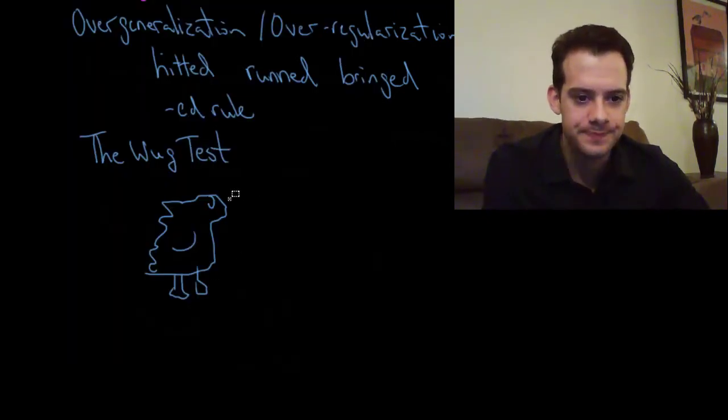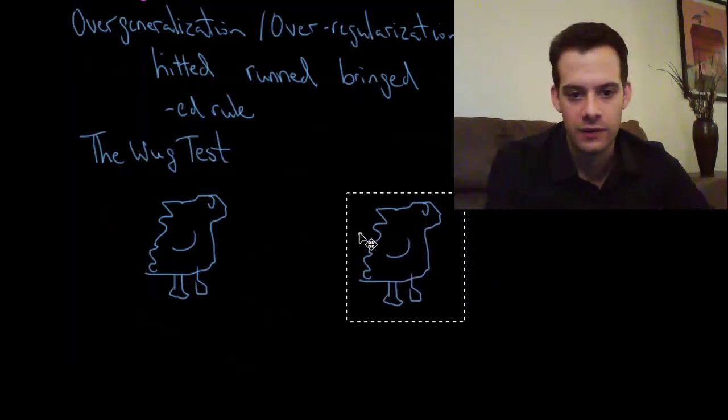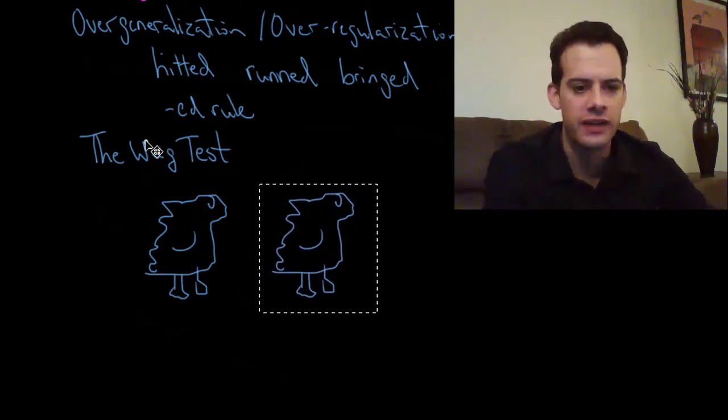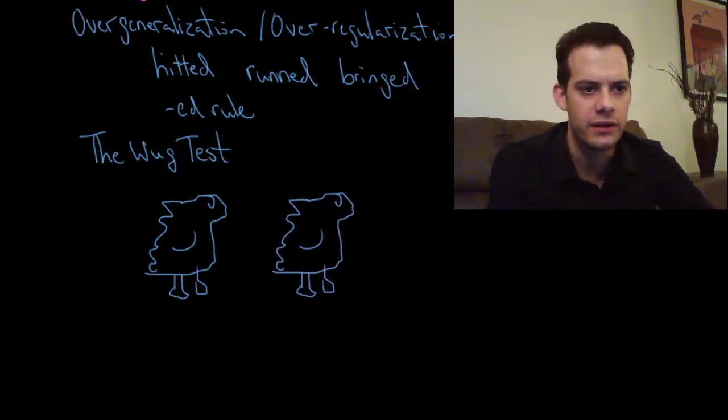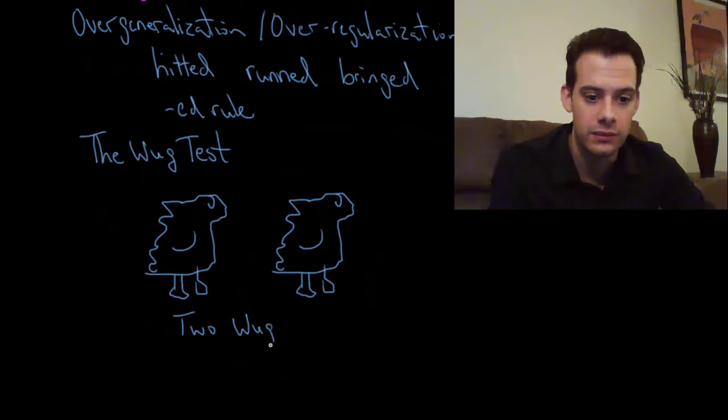Okay so I take this here and I show to the child and I say this is a WUG and then I show them a card with two of these. And I say here are two and I let the child complete the sentence. And what does the child say? Here are two WUGs.